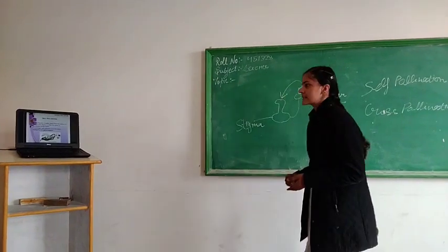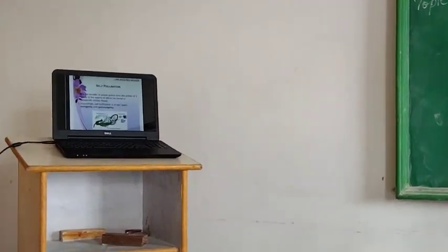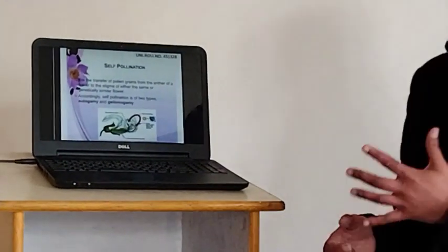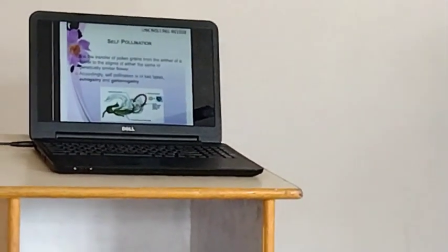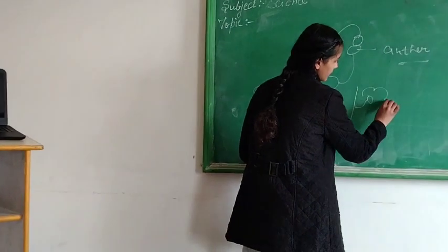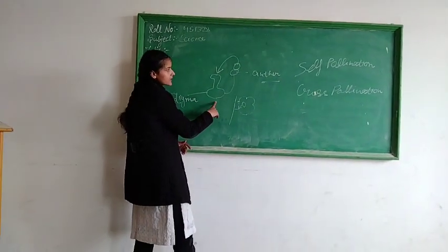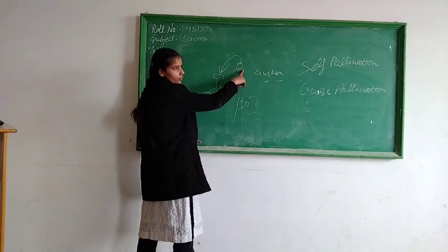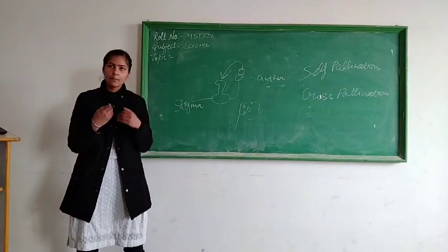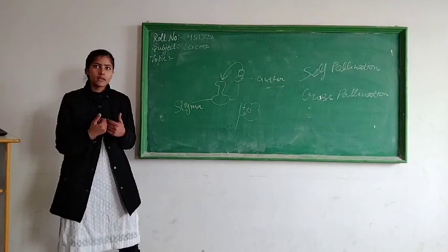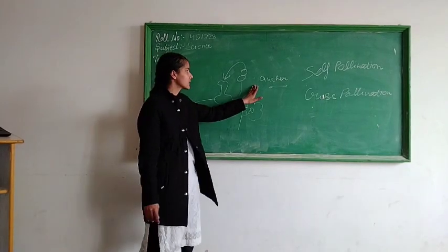Self-pollination means it is the transfer of pollen grains from the anther of a flower to the stigma of the same or a generally similar flower. Self-pollination means this plant is the same flower — the pollen grains transfer within the same flower to its stigma.